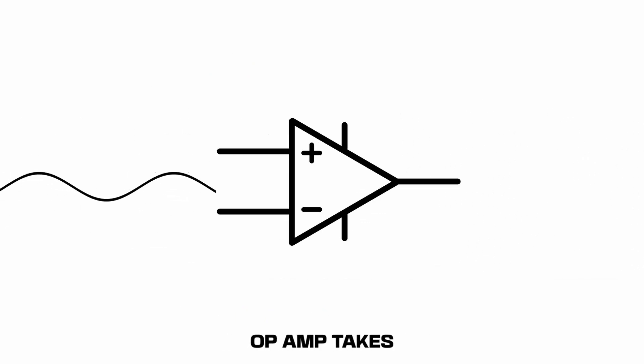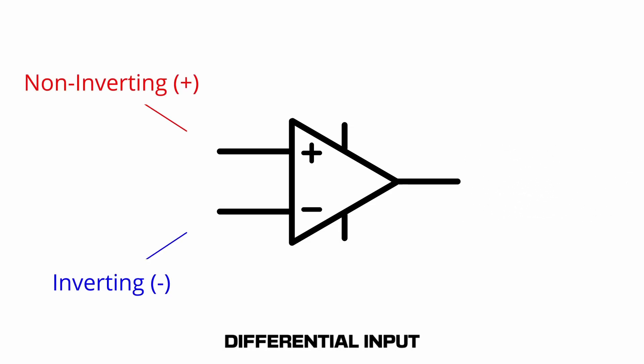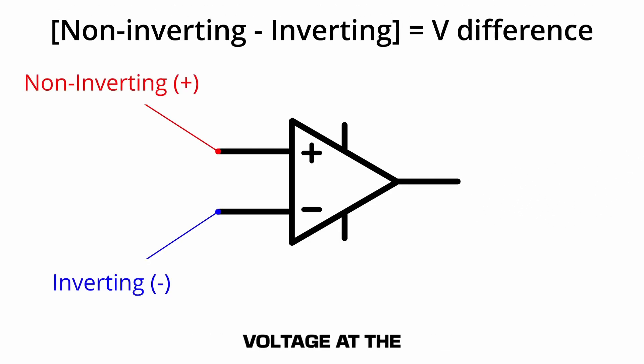In order to understand how an op-amp takes a voltage signal and amplifies it, we must understand its differential input, which is the difference between the voltage at the non-inverting terminal and the voltage at the inverting terminal.